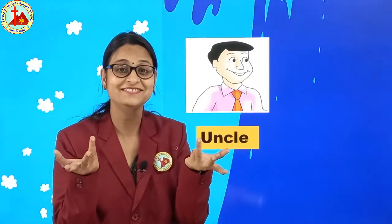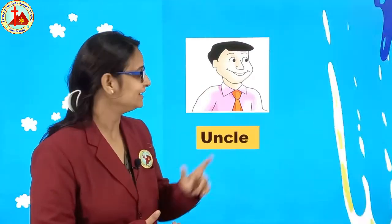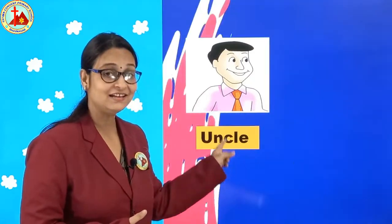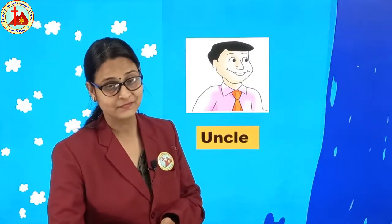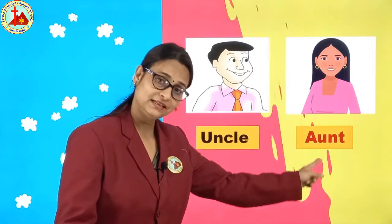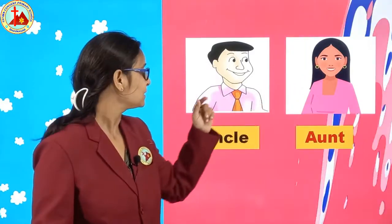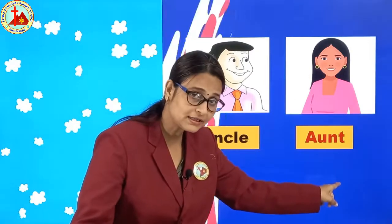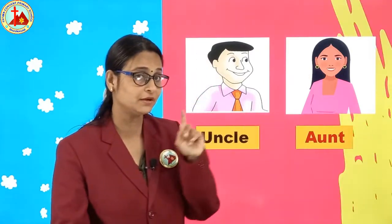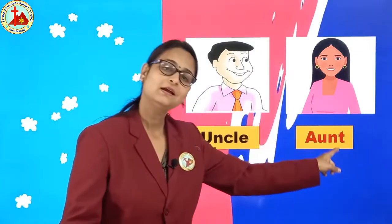U-N-C-L-E. Uncle. Uncle is masculine gender. Aunt is feminine gender. Uncle, aunt. Repeat after me: uncle, aunt.